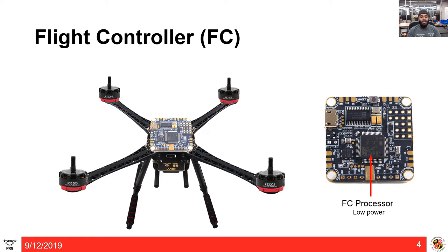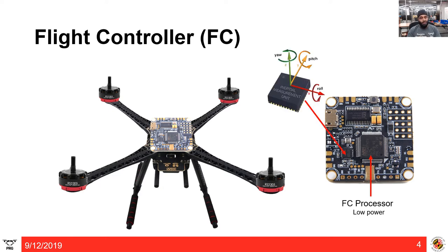Let's move to the programmable part of the hardware: the flight controller. A flight controller (FC) is the heart of a quadrotor and is responsible for controlling almost all the onboard electrical components. It consists of a low-power processor and an IMU for attitude estimation. Depending on the orientation of the quadrotor, the flight controller sends commands to move in a certain direction. You cannot directly send these commands to the motor.